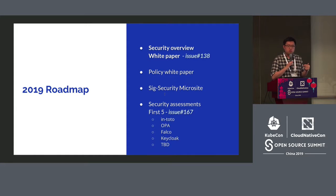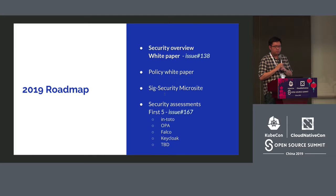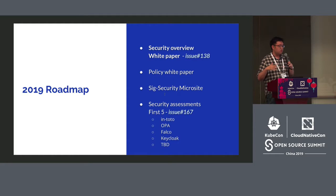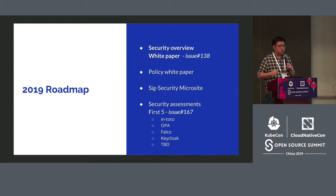Another big thing we have is the SIG Security microsite. There's been a lot of ideas around providing education about security. One of the things we talk about is the types of vulnerabilities generally seen in cloud native applications — for example, TOCTOU (time-of-check time-of-use) errors, where an object is modified between checks. The microsite will serve to put out articles about here are the types of attacks, what you should look at, how to mitigate them, and how to use certain security tools and projects.